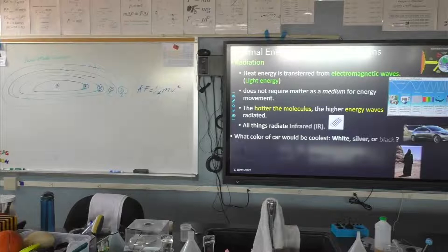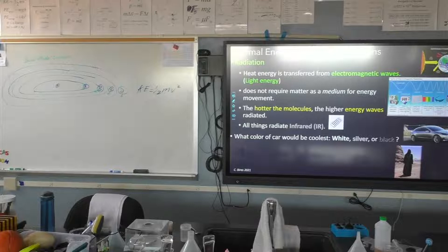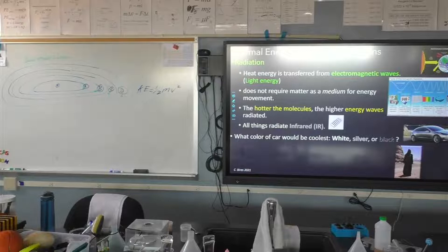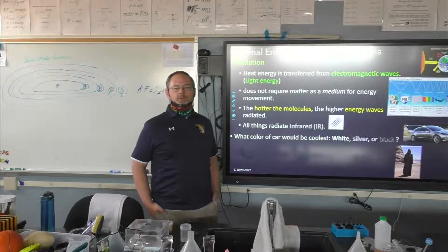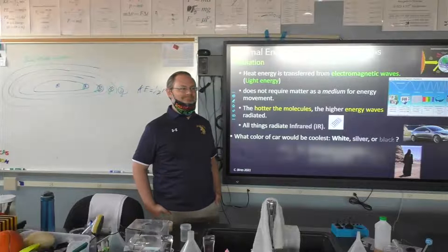What color of car would be the coolest — white, silver, or black? White reflects the most, and black absorbs the most. That's thinking about daytime. What about nighttime? Black would emit the most energy at night. Silver is probably the best — it absorbs the least solar radiation during the day and your car stays cooler. But what about if it gets really cold at night? Which one emits the least amount of energy?